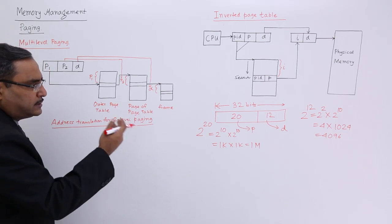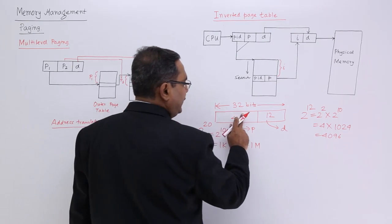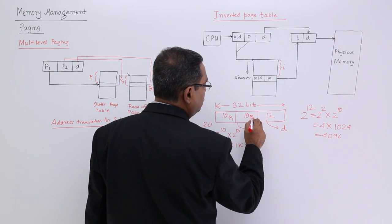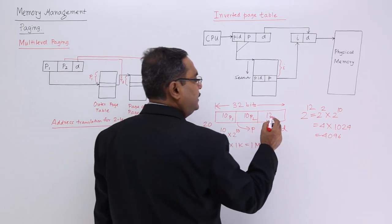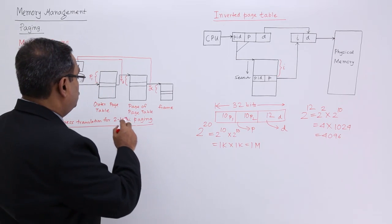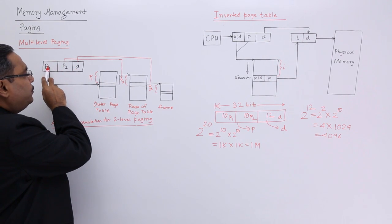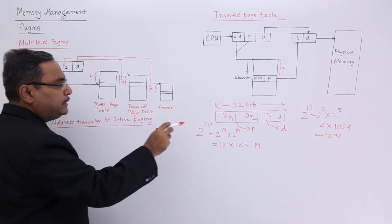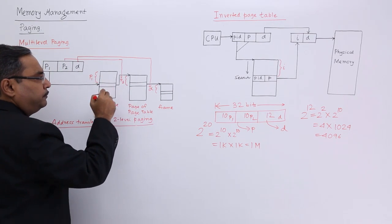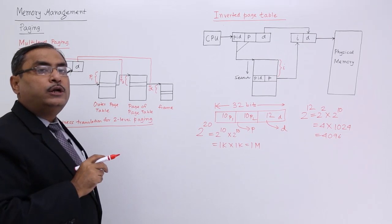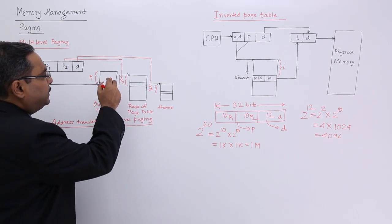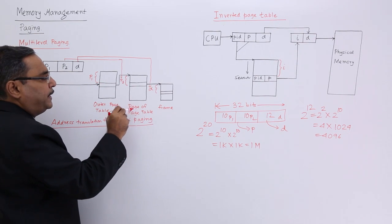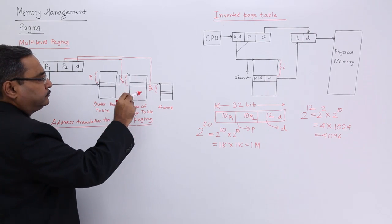That is why we suggest not having 20 bits for the page number as a single unit. Instead, it will be divided into 10 bits and 10 bits, called P1 and P2. So the bit division becomes P1, P2, and D. P1 will be pointing to the P1th location of the outer page table. As P1 is of 10 bits, this outer page map table will have 1024 number of entries. From this 1024 entries, we come to the P1th entry to get the inner page table's starting address.